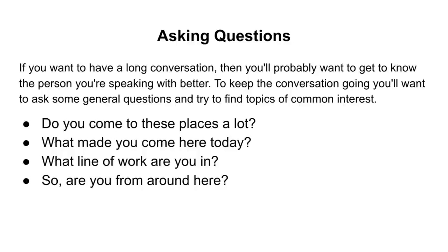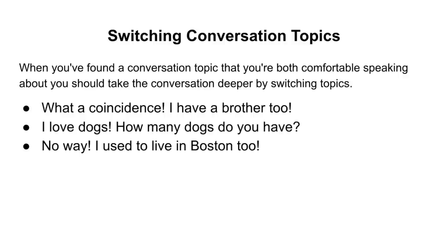We might ask about their job and say, what line of work are you in? A line of work just means an industry or type of work. And we might ask if they're local: are you from around here? Now, when we've found a topic both people are comfortable with, we can take the conversation deeper by sharing information about ourselves too. We might say, you have a brother? What a coincidence, I have a brother too. Or, I love dogs, how many do you have? Or, no way, I used to live in Boston too.